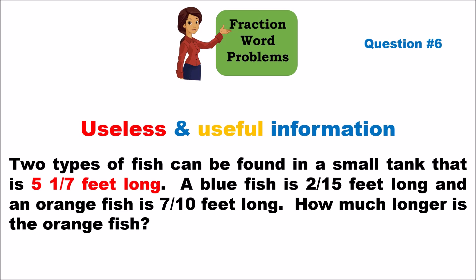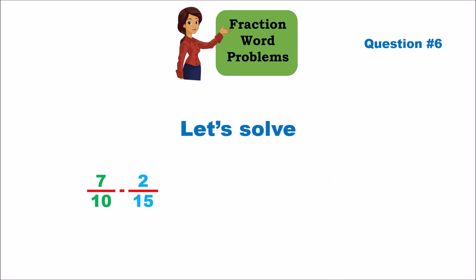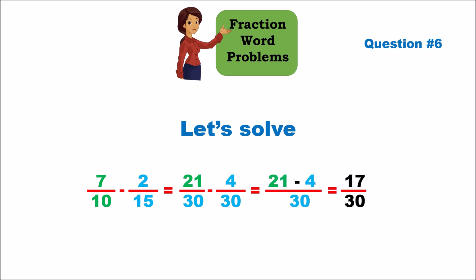We subtract the blue fish length from the orange fish length: seven-tenths minus two-fifteenths. We need a common denominator of 30. Multiply seven-tenths by 3 to get 21 over 30. Multiply two-fifteenths by 2 to get 4 over 30. Now we do straight subtraction: 21 minus 4 equals 17, giving 17 over 30. So the orange fish is 17 over 30 of a foot longer.